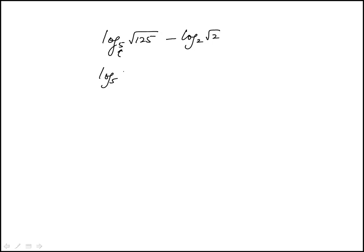The square root can be written as an exponent of one-half, so we have log base 5 of 125 to the one-half, which brings the half in front. Same here, log base 2 of 2 to the one-half equals one-half times log base 2 of 2, which is 1, so that's minus one-half.